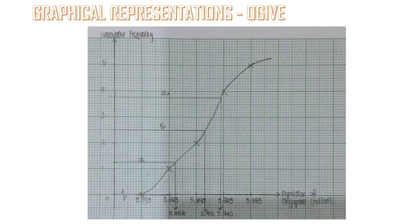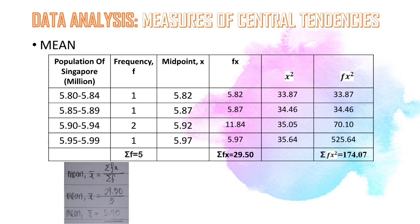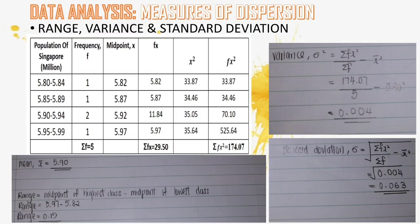This is the ogive graph for Singapore. We then find the mean using the sum of fx divided by sum of frequency. The mean is equal to 5.9 million.